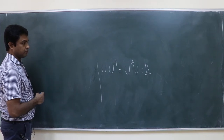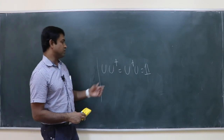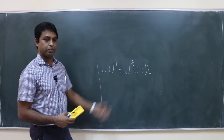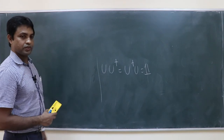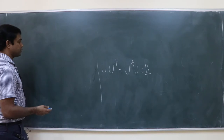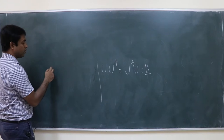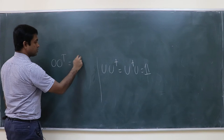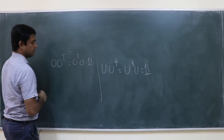The identity matrix is an obvious example, since I I† = I† I = I. Another example is orthogonal matrices. An orthogonal matrix satisfies O Oᵀ = Oᵀ O = Identity.